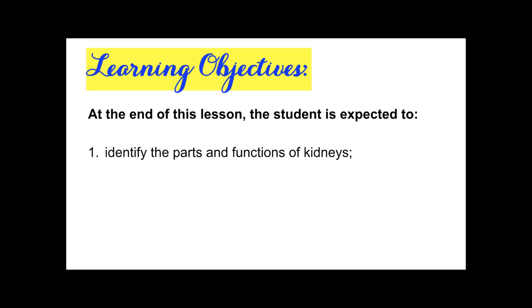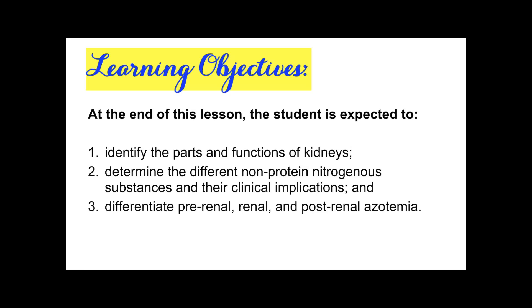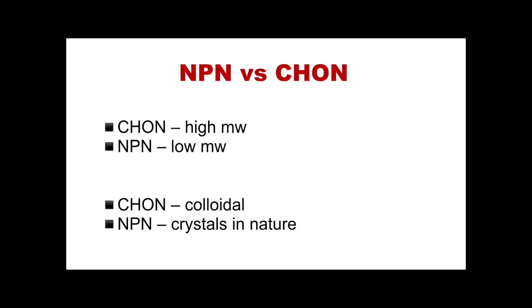For the learning objectives, at the end of this lesson, you are all expected to identify the parts and functions of kidneys, determine the different NPNs and their clinical implications, and lastly, differentiate pre-renal, renal, and post-renal azotemia.